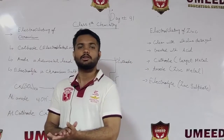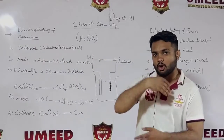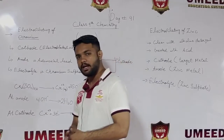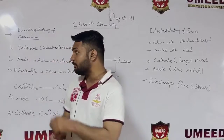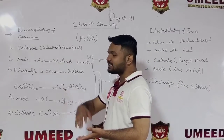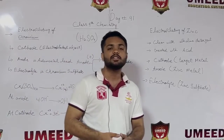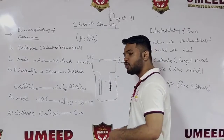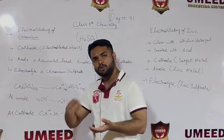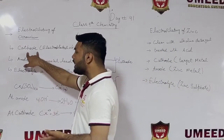We are studying Electroplating. The material which we use for Electroplating of Chromium - it can be any material: it can be iron, silver, steel, or anything. The metal that we electroplate will be used as the cathode.